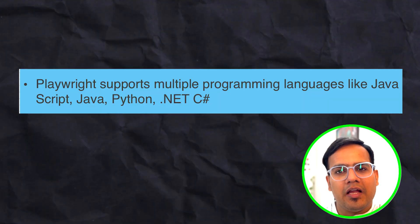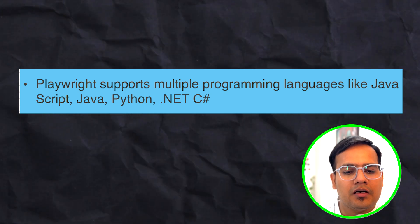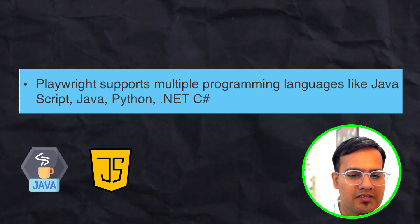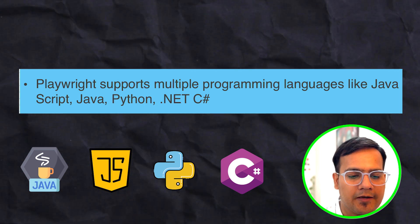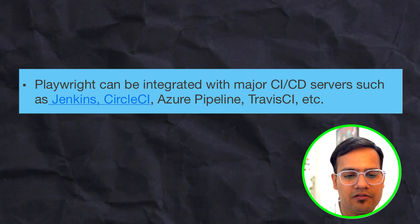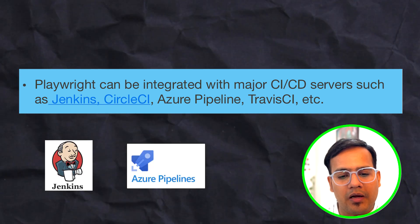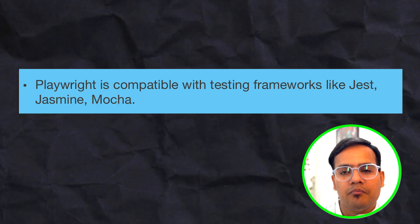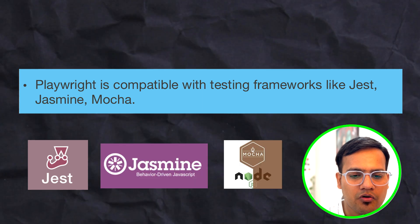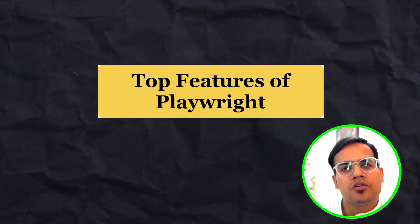Playwright supports multiple programming languages. We generally have the conception that Playwright only works with JavaScript, but it also has bindings for Java, Python, .NET, and C#. Playwright can be integrated with major CI/CD servers like Jenkins or Azure Pipelines. It is also compatible with many testing frameworks like Jest, Jasmine, and Mocha — all JavaScript-based — and other frameworks for other languages.